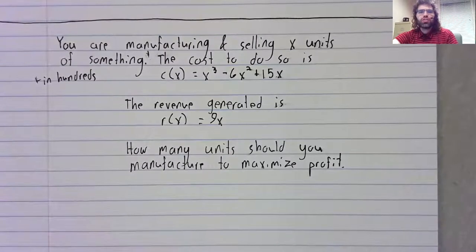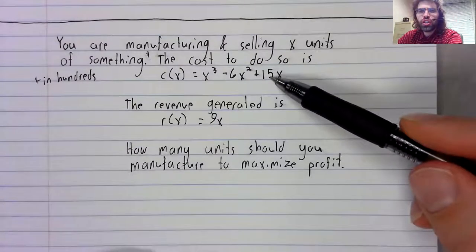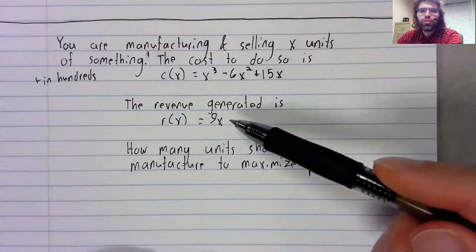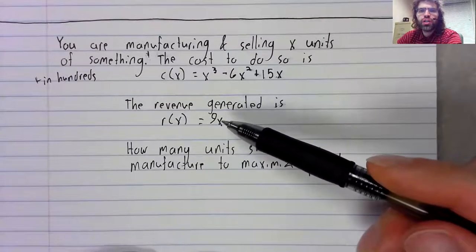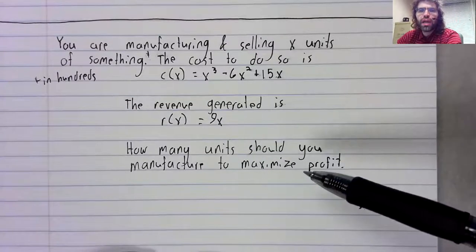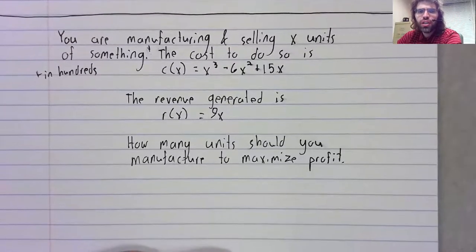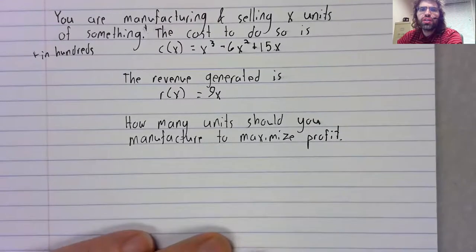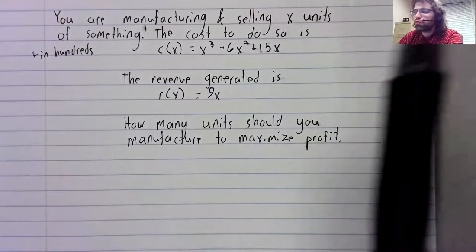The cost to do so is given by a cubic function. The revenue generated is given by a linear function. You want to maximize profit. This is obviously a little simplified, but it is basically realistic.